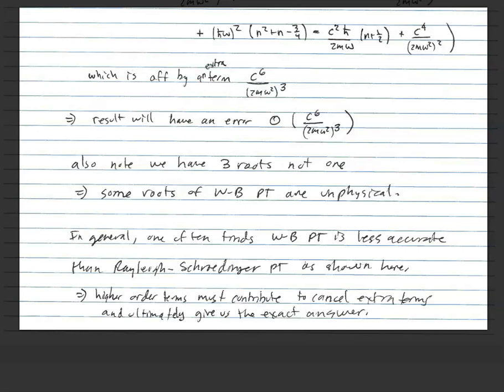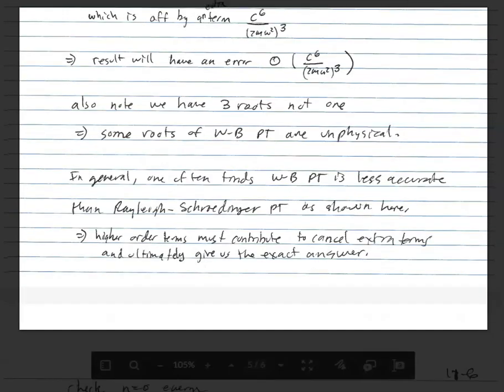In general, we find that Wigner-Brillouin perturbation theory is less accurate than Rayleigh-Schrödinger perturbation theory — as must be the case here. Even without computing the exact roots, we know the exact result is not a root, meaning the roots will be slightly off. Higher-order terms are needed to correct those roots and ultimately give the exact answer.